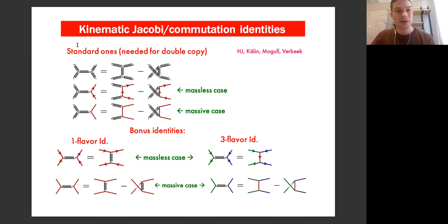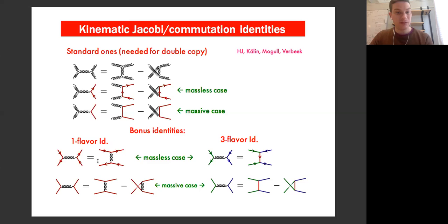Showing the identities pictorially: the obvious standard ones are the ordinary Jacobi commutation relations. We consider the massless case — which has arrows since multiplets are in complex representations — and the massive case, which has no arrows. The bonus identities look like a two-term identity in the one-flavor massless case, which also shows up for N equals two super-Yang-Mills. In the massive case it becomes a three-term identity. The three-flavor identity is a two-term identity in the massless case and becomes a three-term identity in the massive case.